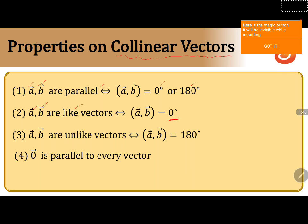Coming to the third property, vectors A and B are treated as unlike vectors. Unlike vectors are vectors which do not have the same direction — they have different directions. If vector A and vector B are unlike vectors, then the angle between them is equal to 180 degrees. Conversely, if the angle between vectors A and B is 180 degrees, then we call them unlike vectors.